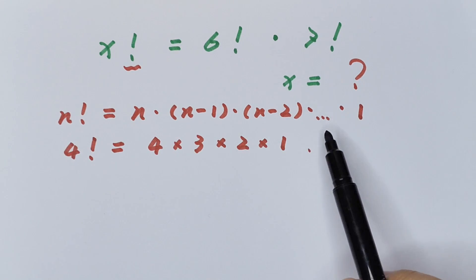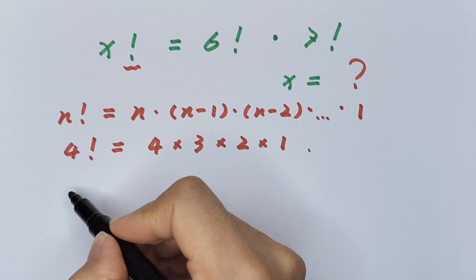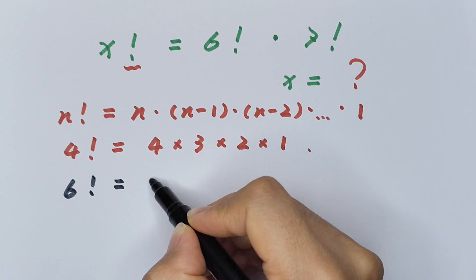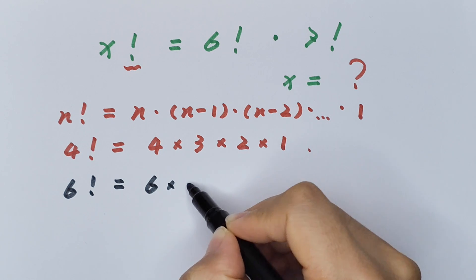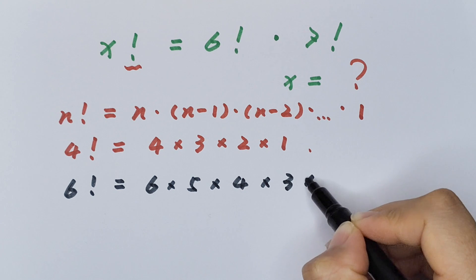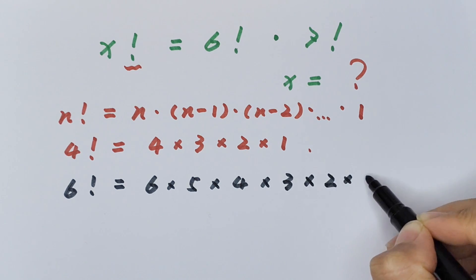From this we know 6 factorial equals 6 times 5 times 4 times 3 times 2 times 1.